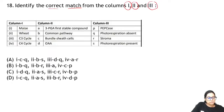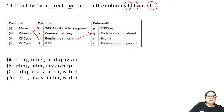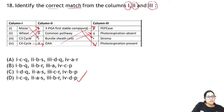For question 18: maize has bundle sheath cells and photorespiration is absent because it is a C4 plant. Wheat — the first stable compound formed is 3-phosphoglyceric acid, and photorespiration is present in C3 plants. C3 cycle is the common pathway and occurs in the stroma. The C4 cycle produces oxaloacetic acid and requires PEP carboxylase. So the answer is D.